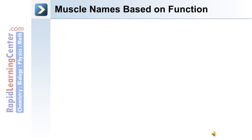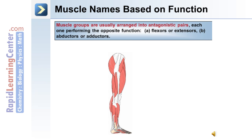Muscles are also named based on function. Muscle groups are usually arranged into antagonistic pairs, each one performing the opposite function. For example, flexors and extensors, or abductors and adductors.